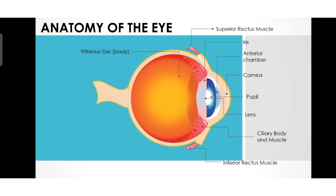Now we have the retina. The retina is the innermost coat of the eye and it contains photoreceptor cells. These cells are responsible for converting light into nerve impulses. The photoreceptors are rod and cone cells.